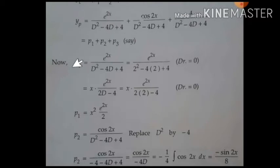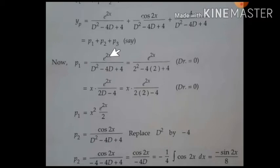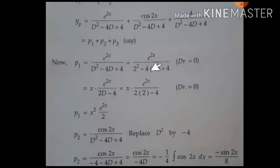P1 is Type 1 — exponential function. The condition: replace d by a = 2. So 2² − 4(2) + 4 = 4 − 8 + 4 = 0. The denominator is zero.